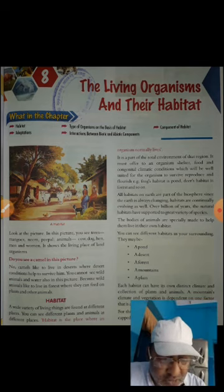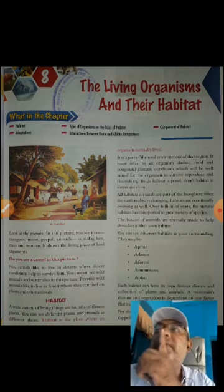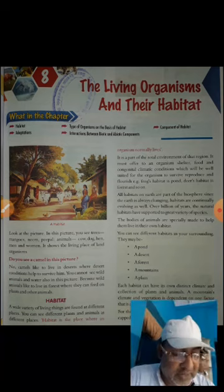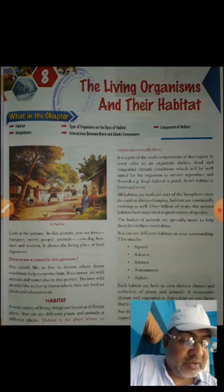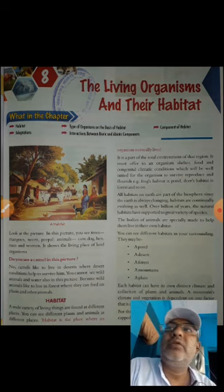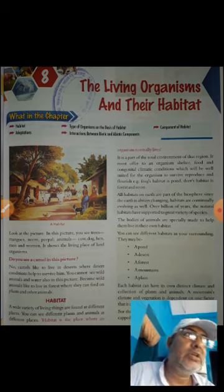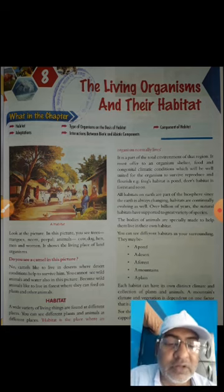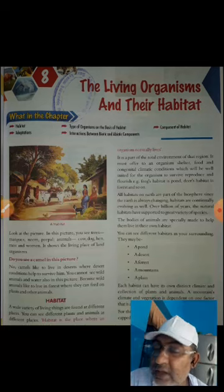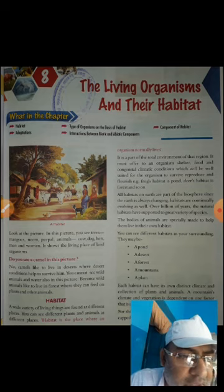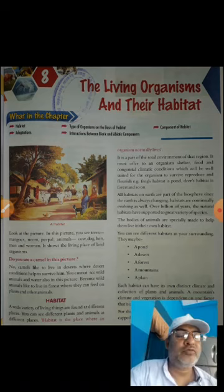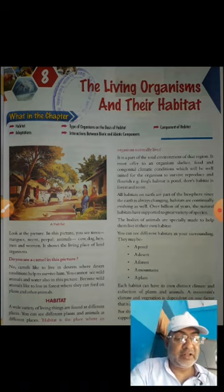In the right-hand side, you see different habitats in your surroundings. We are living — that is a pond, a desert, a forest, a mountain, a plain. We live on plain. Pond is the habitat of aquatic animals. Desert is the habitat of camel, cactus, and many other desert animals.